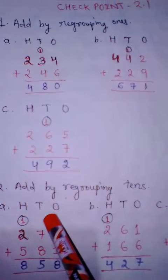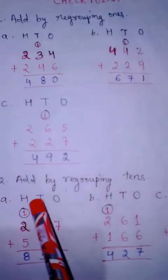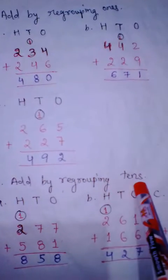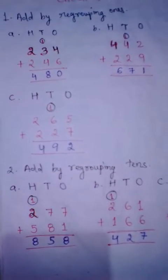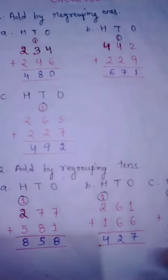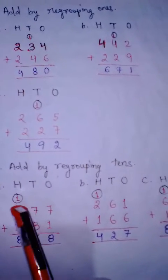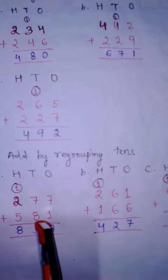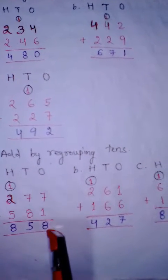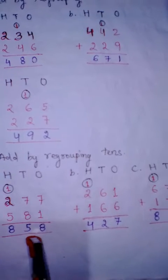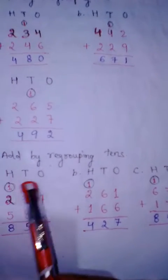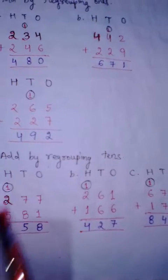Now see question number 2: add by regrouping tens. In part A, we are given 277 plus 581. So 7 plus 1 is 8. And 7 plus 8 is 15. So we regroup the tens place, writing 5 in the tens place and carrying 1 to the hundreds place. So 2 plus 5 is 7, and carry 1 makes 8. Your answer is 858.